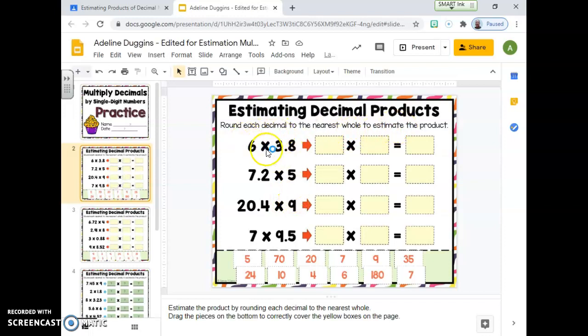Today we're going to be estimating decimal products. You'll round each decimal to the nearest whole to estimate the product. You're going to be clicking and dragging numbers up here to make things that make sense. That obviously does not make sense, but you get the point.